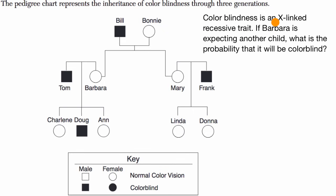Colorblindness is an X-linked recessive trait. If Barbara is expecting another child — this is Barbara right here — what is the probability that it will be colorblind? Pause this video and see if you can figure that out on your own.